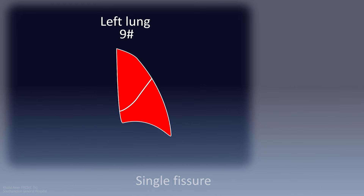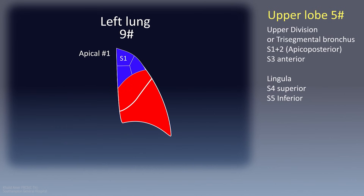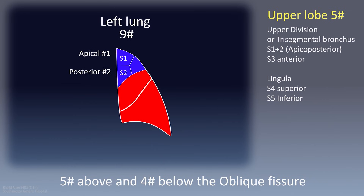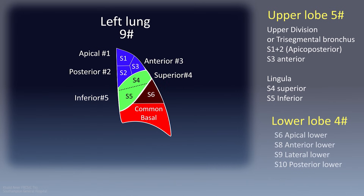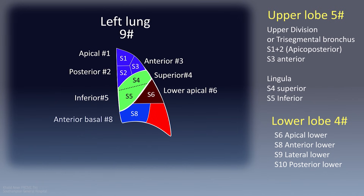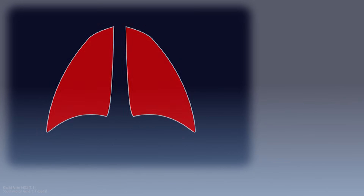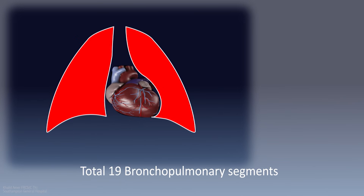Two lobes are fused into one. The left upper lobe, which has five segments, is now larger than the right upper lobe. The left upper division has three segments: the apical (LS1), the posterior (LS2), and the anterior (LS3). The lingula has two segments: the superior (LS4) and the inferior (LS5). The left lower lobe retains the same general arrangement as the right side — apical and common basal. The left apical (LS6) is sometimes known as the superior, and the common basal, having lost LS7, now has the anterior basal (LS8), lateral basal (LS9), and posterior basal (LS10). The oblique fissure on the left separates five segments above it from four below it.